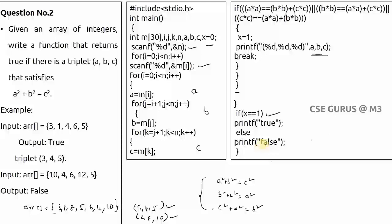You can also try a variation: instead of a² + b² = c², find a triplet where a + b = c. Everything else remains the same — just change the if condition. Try that on your own. We'll see the next question in the next video lecture. Thank you.